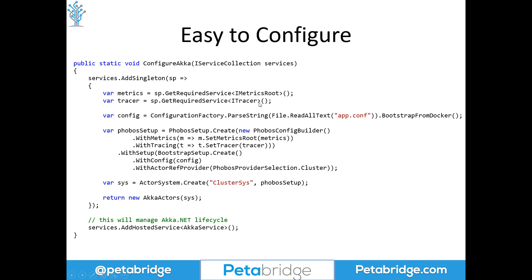We also grab our Hocon from a text file, and bundle all of this inside a Phobos setup class where we pass in a reference to the tracer and the metrics we're going to use. We then package this setup class alongside the bootstrap setup class from Akka.NET, passing in our Hocon configuration and a line of code that tells Akka.NET to launch Akka.Cluster with Phobos installed behind the scenes. That way, all running actors will have tracing and metrics instrumented without you having to write any decorator code yourself.